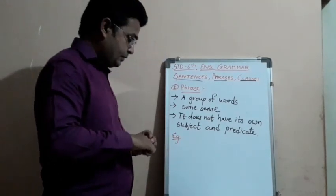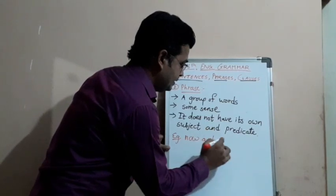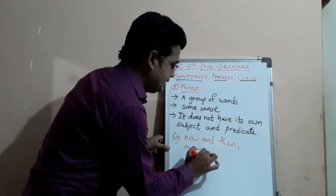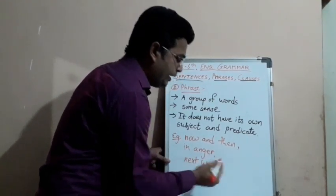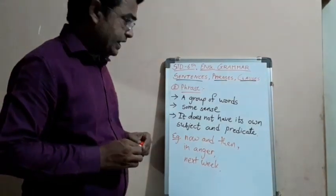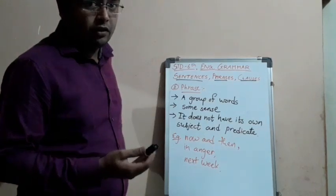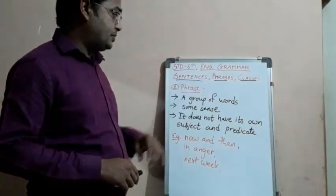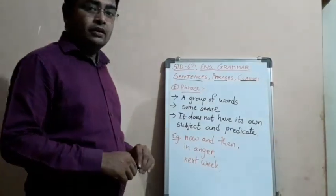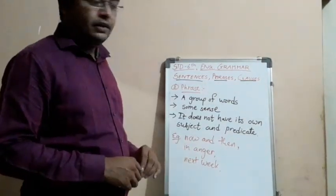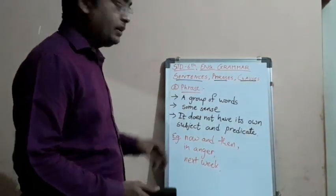Examples we can give: 'every now and then,' 'next week,' 'next year,' 'next month' — many examples of phrases. You can see that 'in anger' means somebody is very angry, but about whom they are angry we do not know. That is why it is a phrase — it gives us only some sense, not complete sense. You cannot see any noun or pronoun acting as a subject, and there is no verb, so it does not have subject and predicate. I hope it is clear.